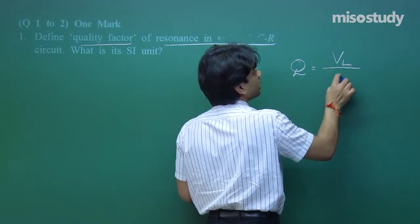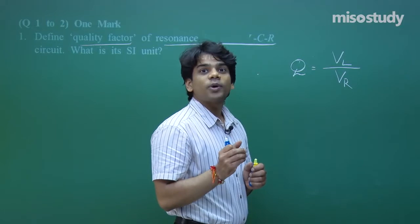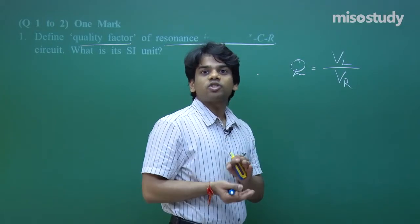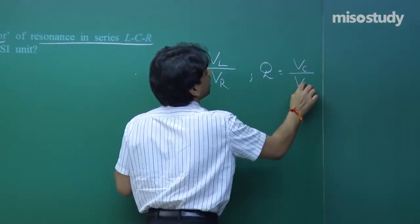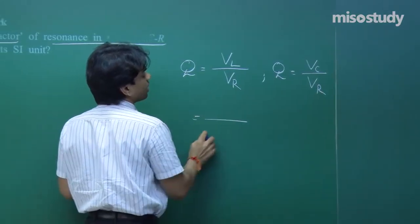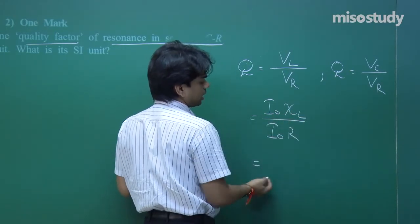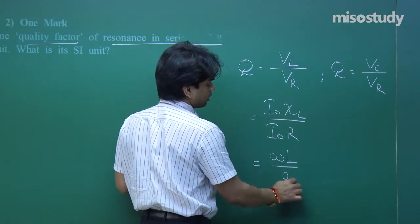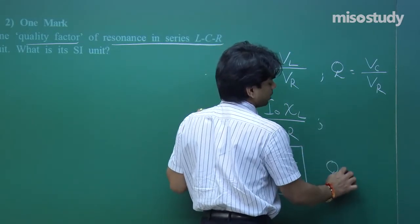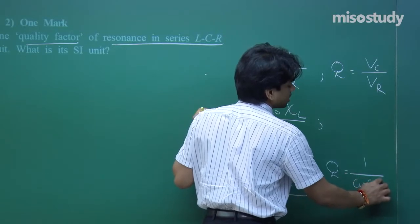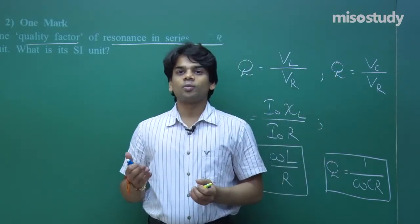The Q factor, or quality factor, is the ratio of voltage drop across the inductor with respect to the voltage drop across the resistor — VL upon VR. It is also equal to the ratio of voltage drop across the capacitor with respect to the resistor — VC by VR. Using VL/VR, we get I₀·χL divided by I₀·R, so χL = ωL/R. Similarly, for VC/VR, it gives 1/(ωCR).